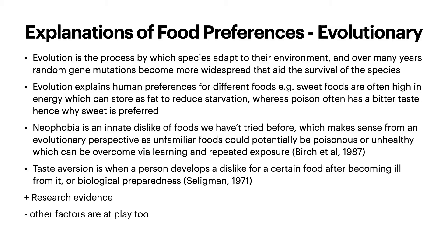The repeated exposure effect is something that Bert Jettow in 1987 found when studying children. Then we have taste aversion — this is when a person develops a dislike for a certain food after becoming ill from it, also known as biological preparedness from Seligman in 1971. So this is our body telling us this has made us ill, so we don't want to have it anymore. There is research evidence to support this, but of course there are always other factors at play, including social reasoning.